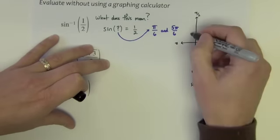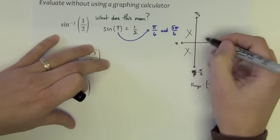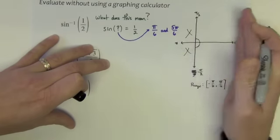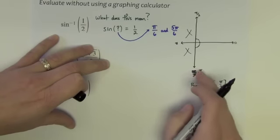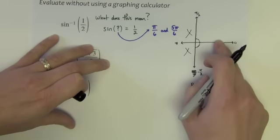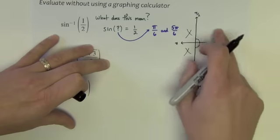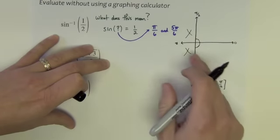So essentially I'm looking for an angle that is anywhere on the right side of my graph between 90 degrees in the negative direction and 90 degrees in the positive direction, negative to positive pi over 2. And so I think to myself, where are these angles here?